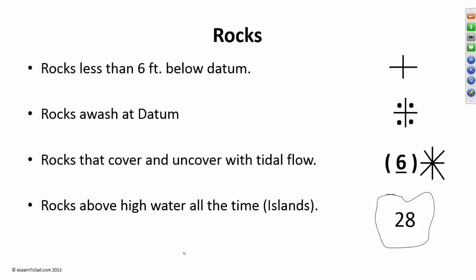Rocks. Pretty interesting topic. Rocks that are less than six feet below datum are a straight cross. Rocks that are awash at datum have the four dots. Rocks that cover and uncover with tidal flow, as the tide goes up or the tide goes down, the rocks are either exposed or they're hidden are with an asterisk. But the important thing to note here is you see this line underneath the six? The way I think of this is that this line represents datum.